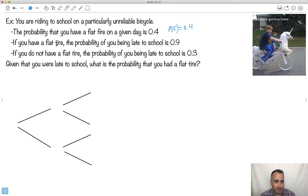If you have a flat tire, the probability that you're late is 0.9. But if you didn't have a flat tire, then the probability that you're late is 0.3. In other words, you're basically late a lot of the times. You're late 30% of the time to begin with. You're maybe not the most reliable student. So given that you're late to school, what's the probability you had a flat tire?